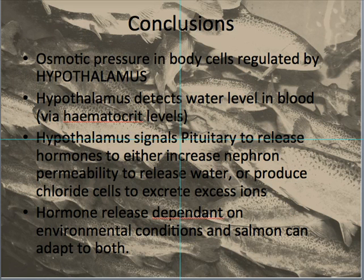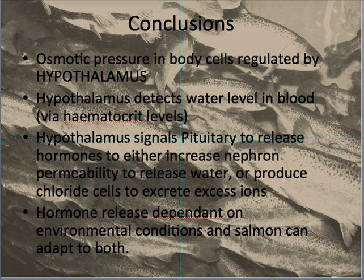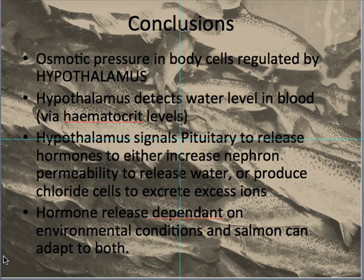To conclude, osmotic pressure in the body cells is regulated by the hypothalamus. It detects the water level in the blood by detecting hematocrit. It will signal to the pituitary to release the necessary hormone to either increase the nephron permeability to get rid of water, or do the reverse and try to keep the water in and produce the chloride cells to allow it to excrete the excess. And it all depends on the environment they're in. Thanks very much, guys. Hopefully this has helped.